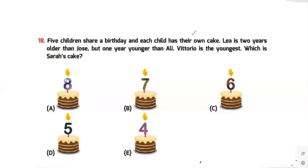Question 18: Five children share a birthday and each child has their own cake. Leah is two years older than Uzay and one year younger than Ali. Vittario is the youngest. Which is Sarah's cake? There are five cakes for five children. Let's start: Vittario is the youngest, so the smallest cake belongs to Vittario.